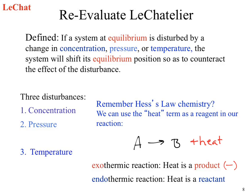If we increase the heat, we're increasing the concentration of our products, which means to achieve equilibrium, we need to go left. We want to reduce the disturbance and shift towards our reactants. What happens if we decrease the heat of our reaction? We need to account for that loss of heat, so we're going to start to form more products.